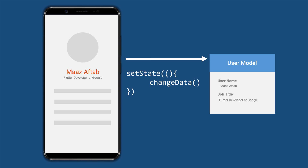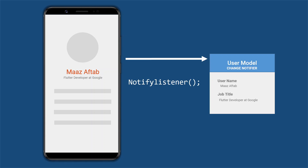There exists a better way. You can make your user model a ChangeNotifier, which is from provider. Then you don't need to call setState anymore, because if something is a ChangeNotifier and some of its fields get changed, you simply call notifyListeners. It will notify all the listeners of the user model — all parts of the screen that are using this user model — and those parts will get re-rendered to show the latest result.